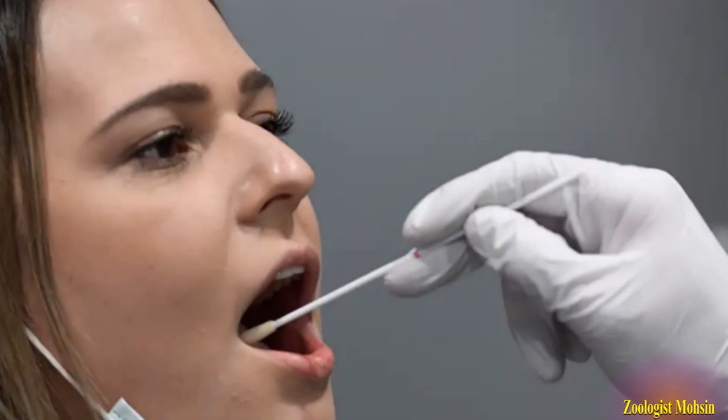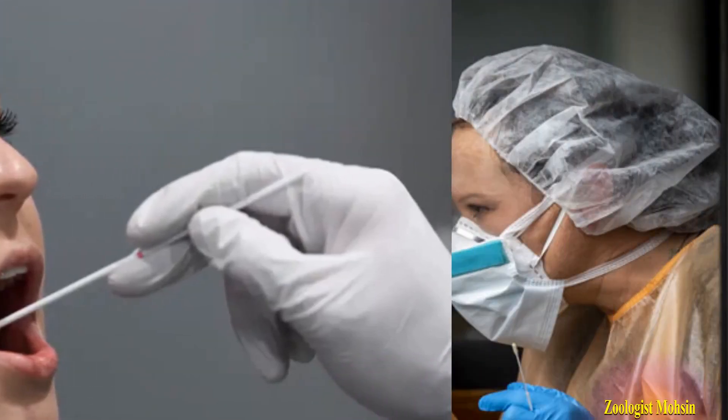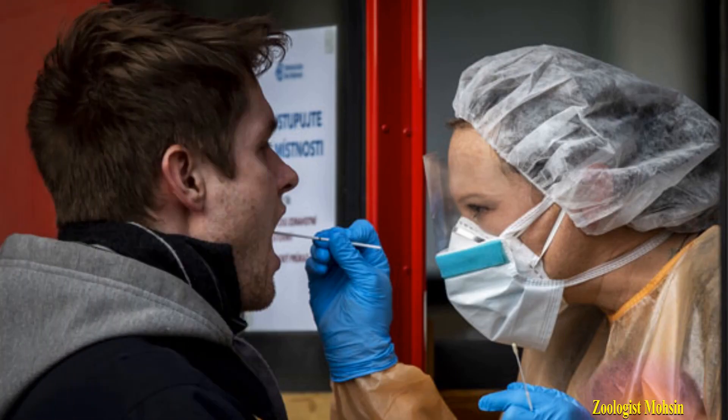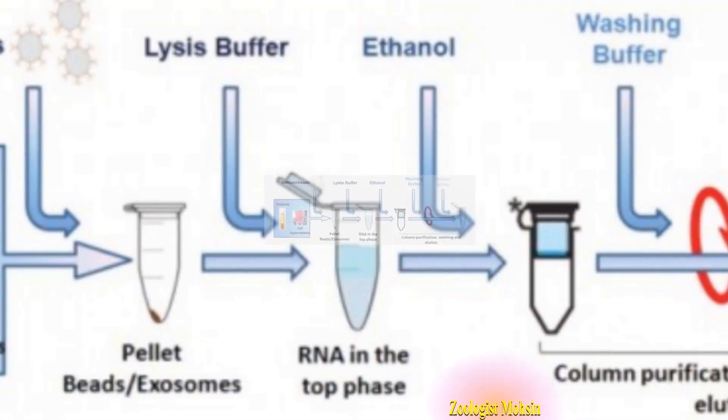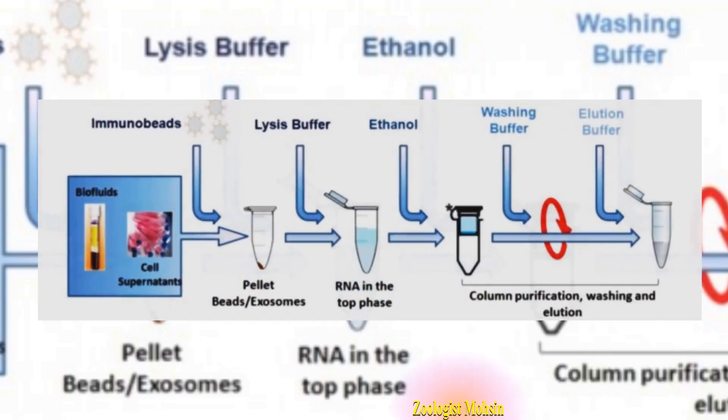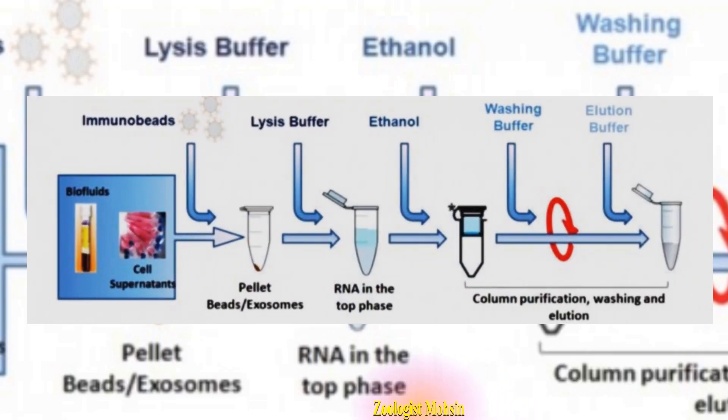Basics behind coronavirus PCR test for students and common people. First of all, a sample is taken from nasopharyngeal walls in the form of mucus or sputum, because coronavirus replicates in the nasopharyngeal cavity first and then moves down to lungs within days.